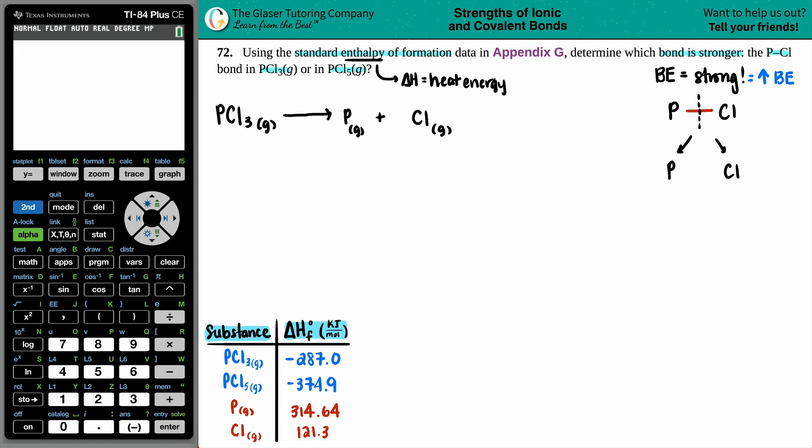Now just make sure that this equation is balanced. You have one phosphorus, one phosphorus, but then you got three chlorines. On this side, you only got one. So we're going to have to put a coefficient here of three. Now that equation is balanced.